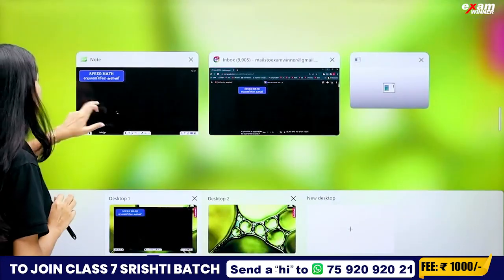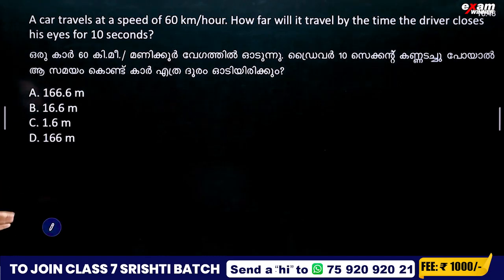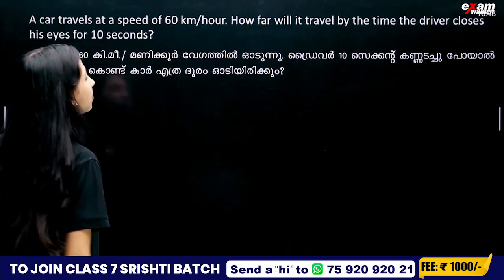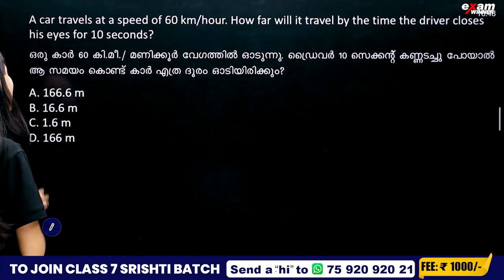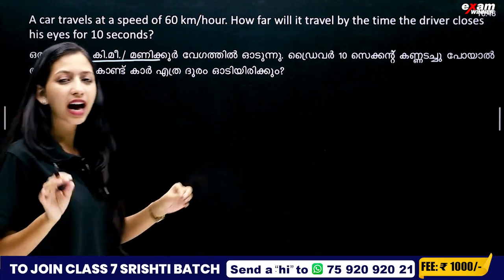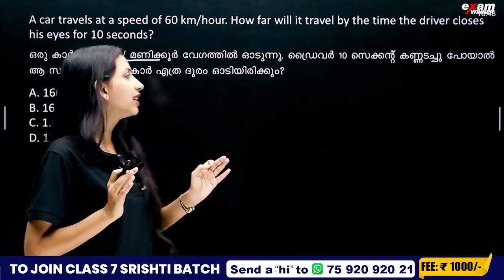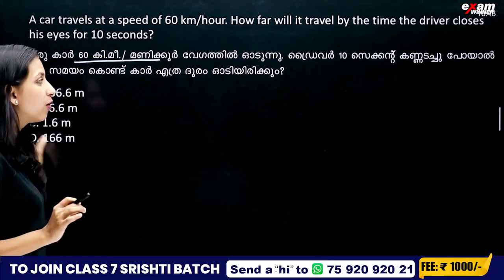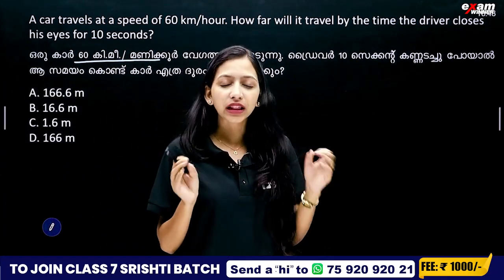First question: A car travels at a speed of 60 km per hour. How far will it travel by the time the driver closes his eyes for 10 seconds? The car is at a speed of 60 km per hour and the driver closes his eyes for 10 seconds.